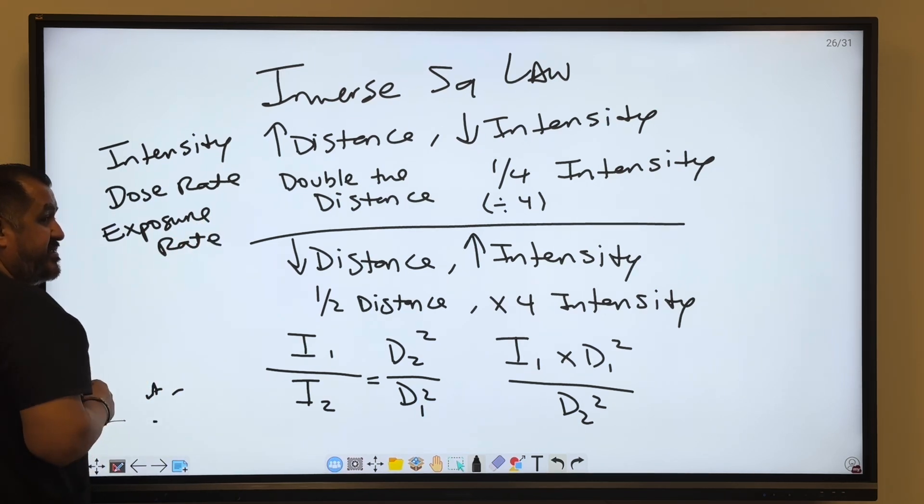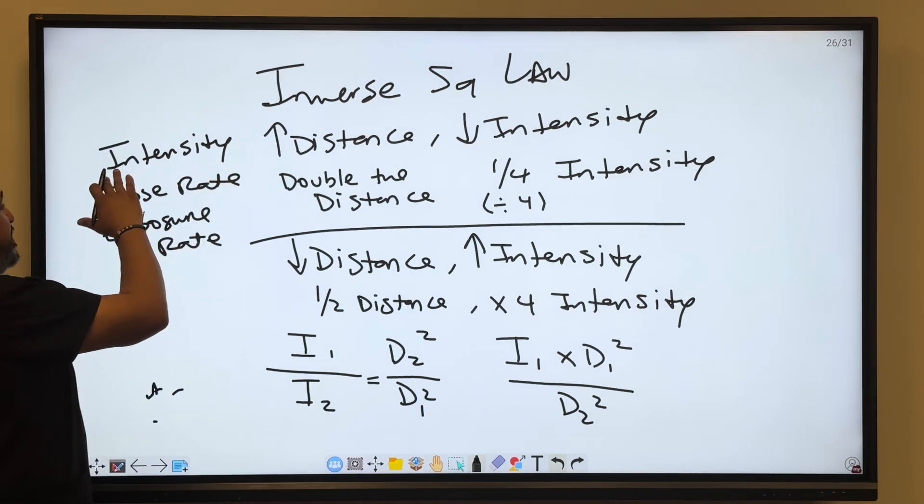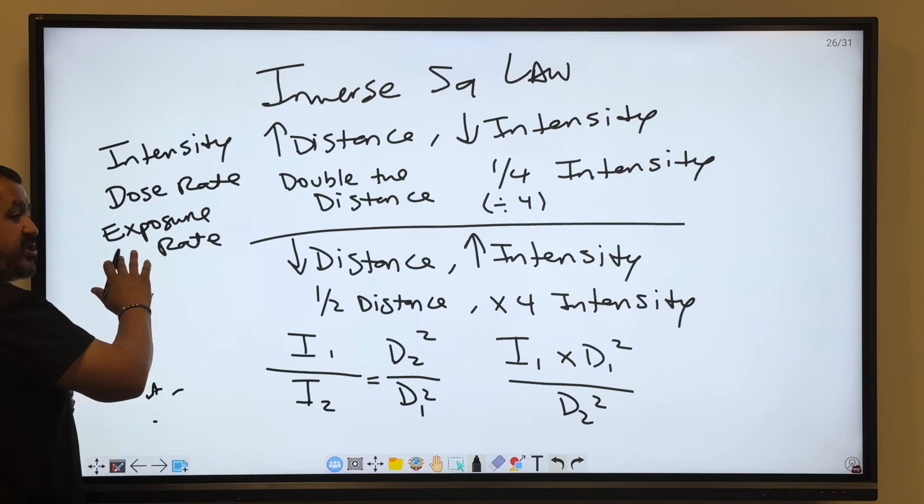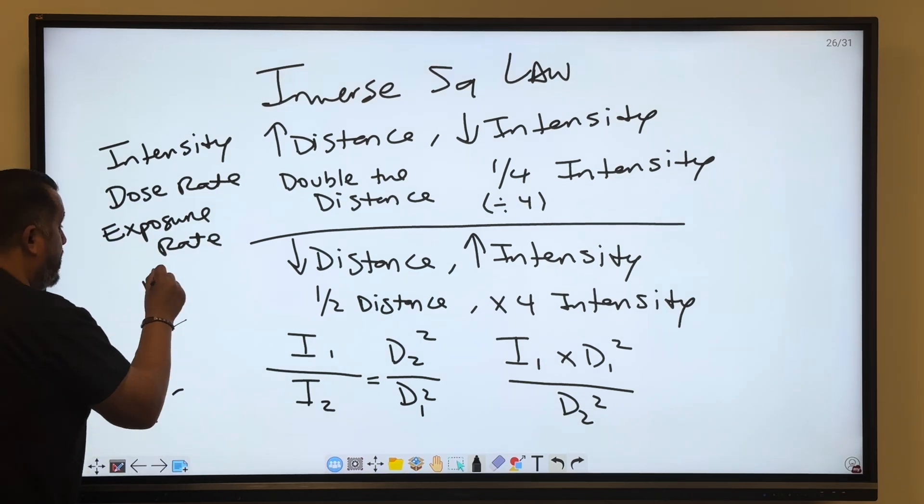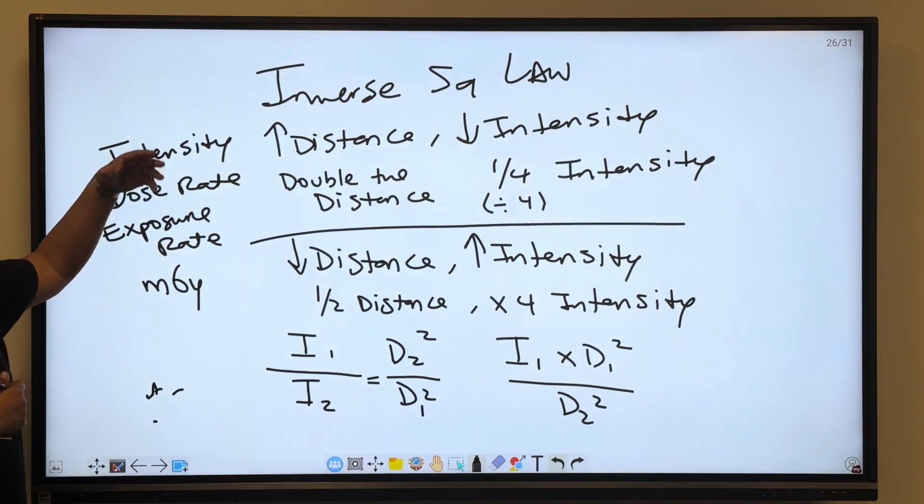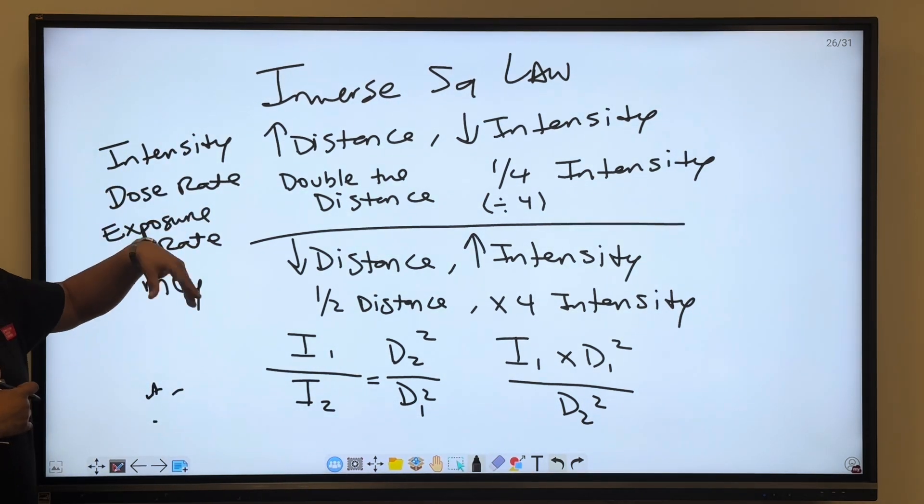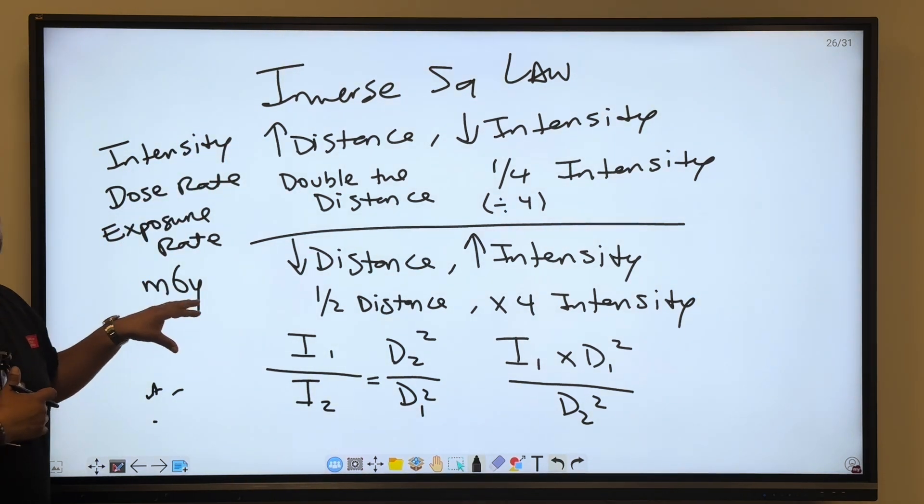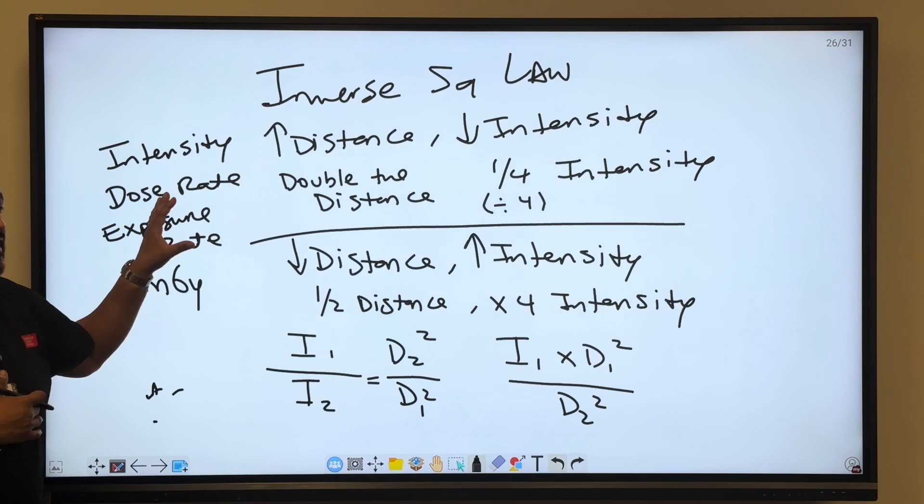If there's a change of distance and there's a change of intensity, a change in dose rate or exposure rate, or we see milligray, that's kind of a giveaway because the milligray is the absorbed dose that's happening in the air. So intensity with a change of distance, exposure rate with a change of distance, dose rate with a change of distance, or there's a new milligray with a change of distance, that's the inverse square law.